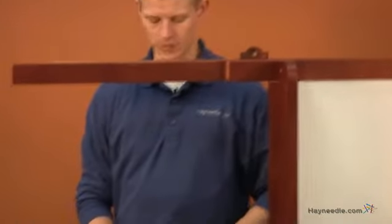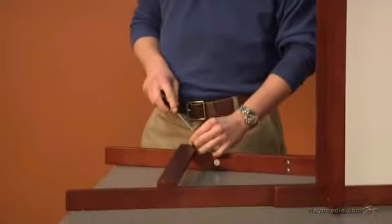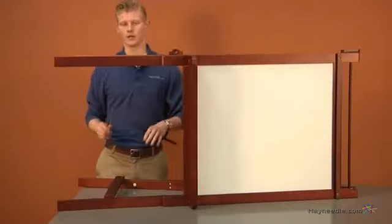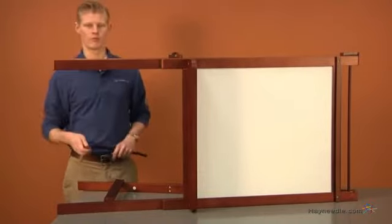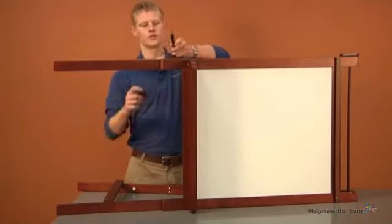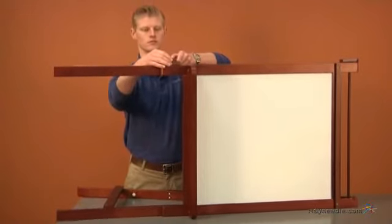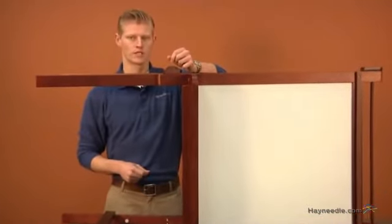Then we'll take our F crossbar at the bottom here and attach our two legs. Now you can repeat the process with the other easel board but remember before you attach your other I piece you'll need to insert your J crossbar and screw that down and repeat the process on the other side.